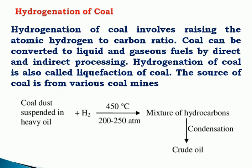Coal comes from various coal mines. In the process, coal dust is mixed and suspended in heavy oils with a catalyst, along with the addition of hydrogen gas, then heated to 450 degrees centigrade at 200 to 250 atmospheric pressure. The solid coal is converted into a mixture of hydrocarbons. Through condensation reactions, crude oil is obtained, which is then separated through a fractional distillation column.